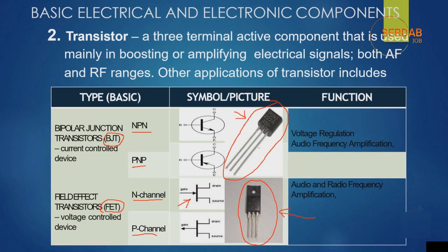This is covered in the practical section at the end of this course, where you can see how to test a transistor, how to check if it is working, and how different types of transistors work. To summarize: the BJT is for current-control devices and consists of collector, base, and emitter terminals. The FET is for voltage-control devices and has gate, drain, and source terminals.